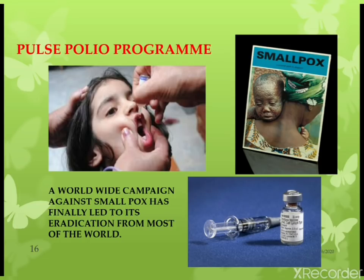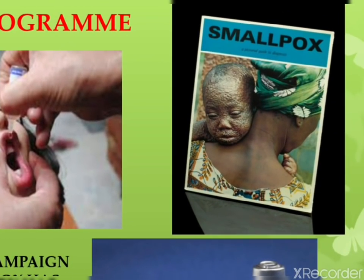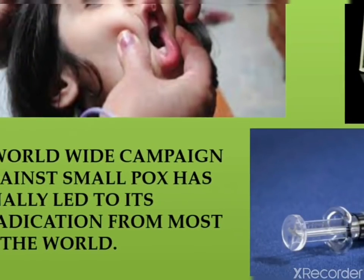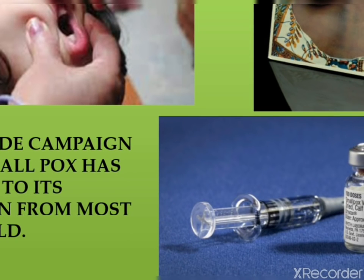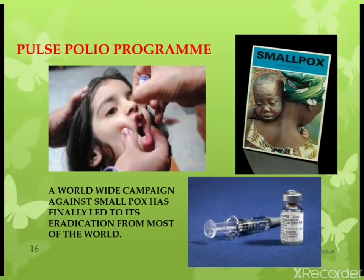Edward Jenner first discovered the vaccine for smallpox in 1798. Smallpox was a very dangerous disease. You might have seen advertisements on TV and newspapers regarding protection of children against polio under the pulse polio program — the polio drops given to children are actually a vaccine. A worldwide campaign against smallpox has finally led to its eradication from most of the world, and this smallpox disease has been eradicated by vaccination.